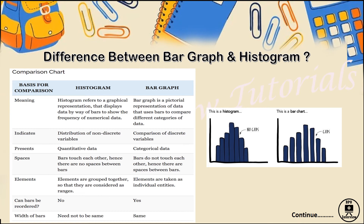In a histogram there is no space between the bars, whereas in a bar chart there is a space between the bars. If the data is continuous in nature, we use a histogram. For example, a scoreboard in cricket shows a graph in continuous method, meaning the data is flowing continuously.